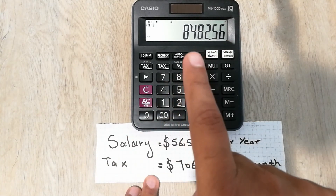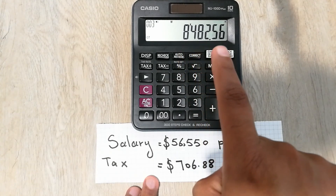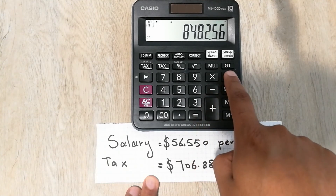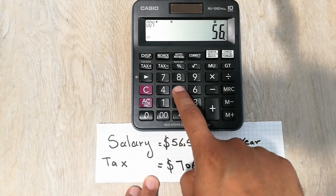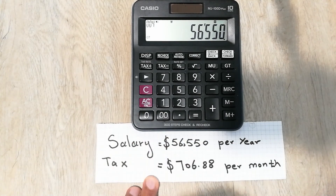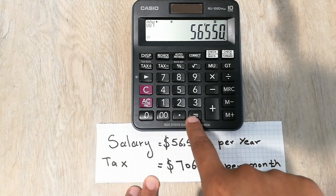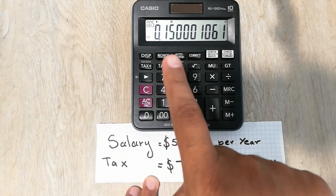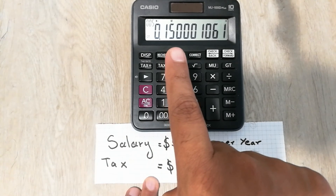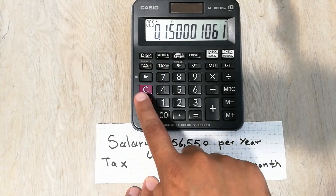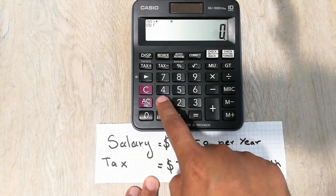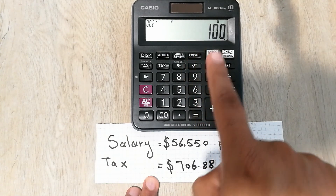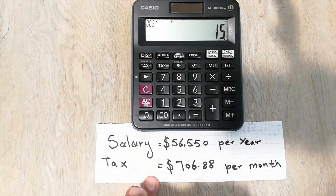In the second step, we divide eight thousand four hundred and eighty-two point five six by fifty-six thousand five hundred and fifty. The answer is point one five zero zero zero zero. Because this comes as a decimal, we multiply point one five with one hundred, and the answer is fifteen.